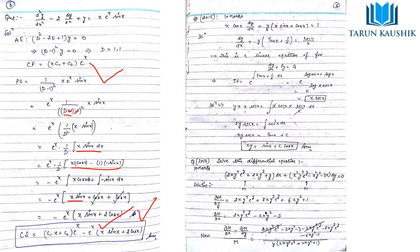After adding the complementary function and the particular integral, we get the complete solution. Now we will be solving only the questions that UPSC has given in the past years. In 2015, a 10-mark equation was given: x·cos x plus this expression is given as the statement.